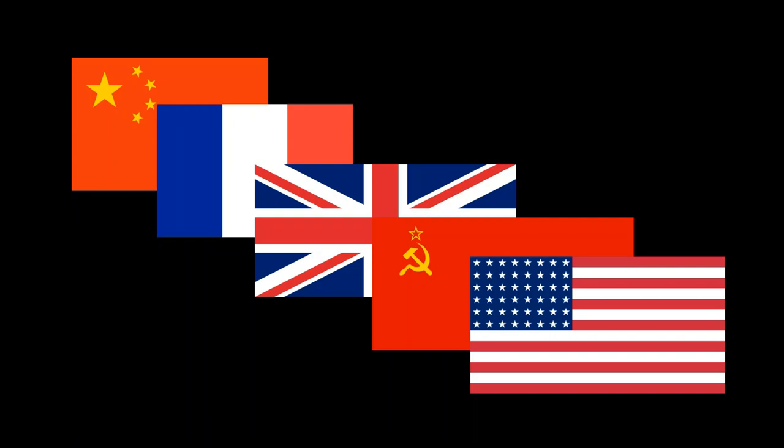Putting all this together, the capacity model makes a solid prediction about the first five countries to develop nuclear weapons: the United States, the Soviet Union, the United Kingdom, France, and China. These are the major powers. It stands to reason that they have the best ability to produce the manufacturing necessary, to withstand the infrastructure constraints, to build a nuclear weapon.